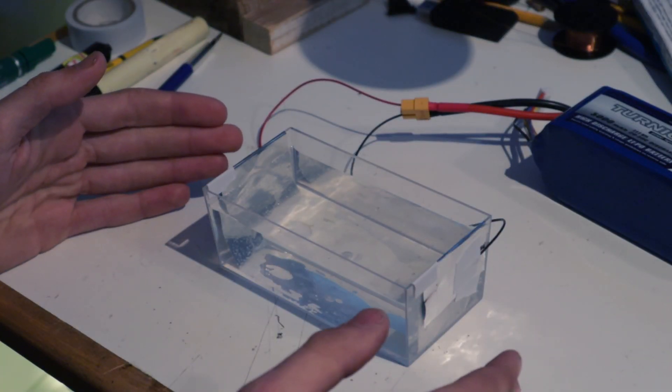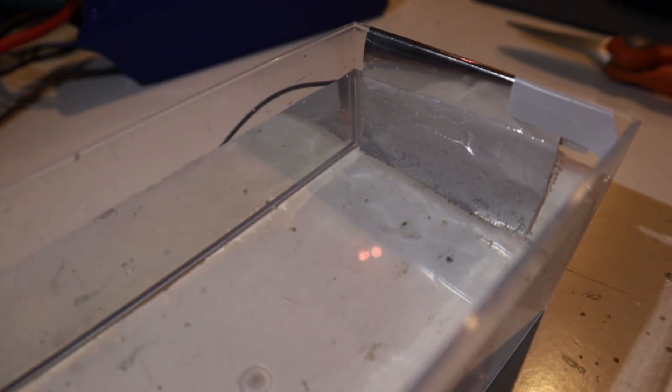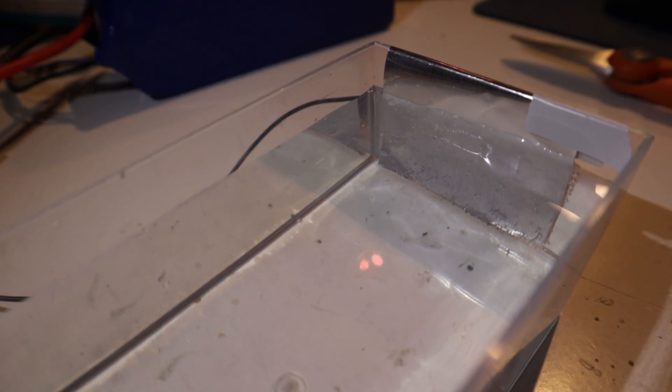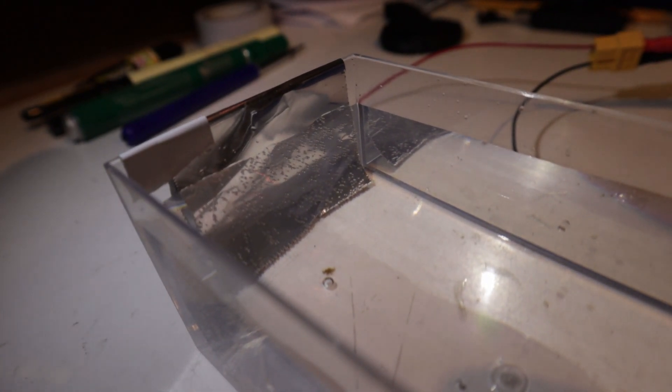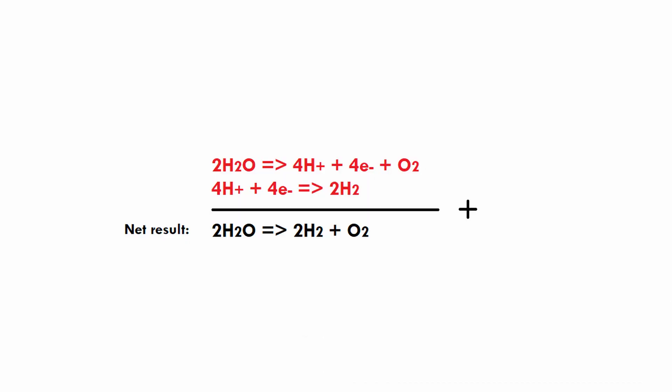Now as you might have noticed, there is actually more hydrogen bubbles than there are oxygen bubbles, and that can be explained by looking at that reaction. Because of course we produce twice as many hydrogen molecules as we produce oxygen molecules, which is why we have more bubbles on the hydrogen side than on the oxygen side.